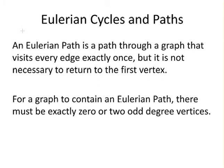An Eulerian path is a path through a graph that visits every edge exactly once, but it's not necessary to return to the first vertex.